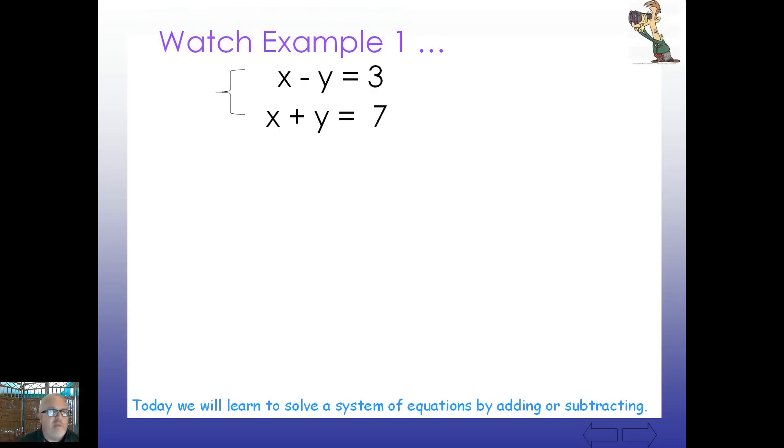So just watch this example. Notice we've got this system here. X minus Y equals 3 and X plus Y equals 7. A nice, straightforward, simple example. If we solve it by substitution, we would end up maybe adding Y to both sides and plugging it in for X. But just watch the simplicity of this. Take these two equations. Notice how nice they are. They line up. X's over X's. Y's over Y's. Constant over constant. Equal sign over equal sign. And simply use an operation you've been using since primary school, addition.